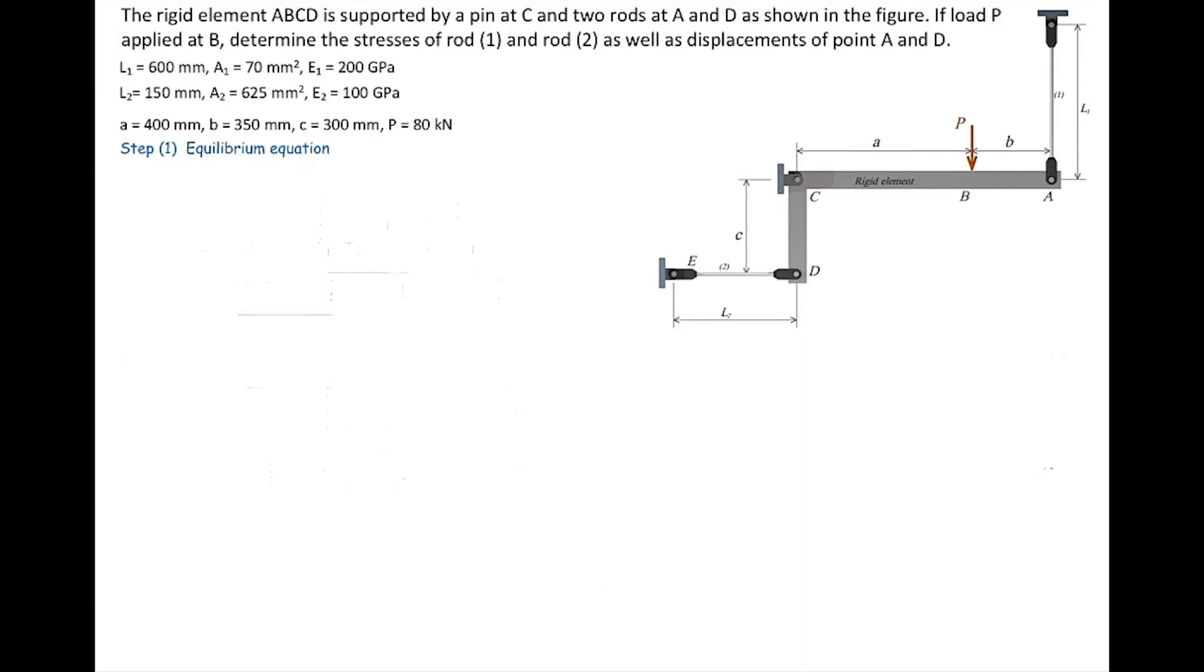In this problem, the rigid element ABCD, the L-shaped element, is supported by a pin at C and two rods at A and D. This system is subjected to a force of P, and we want to determine the stress in rod number 1 and rod number 2.